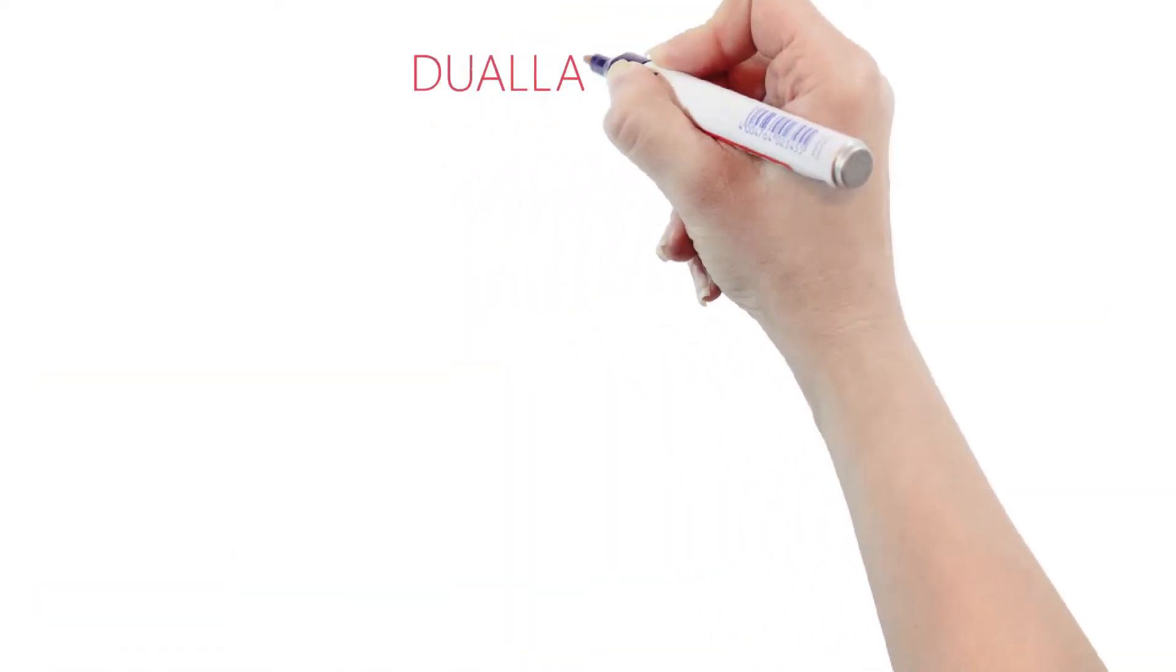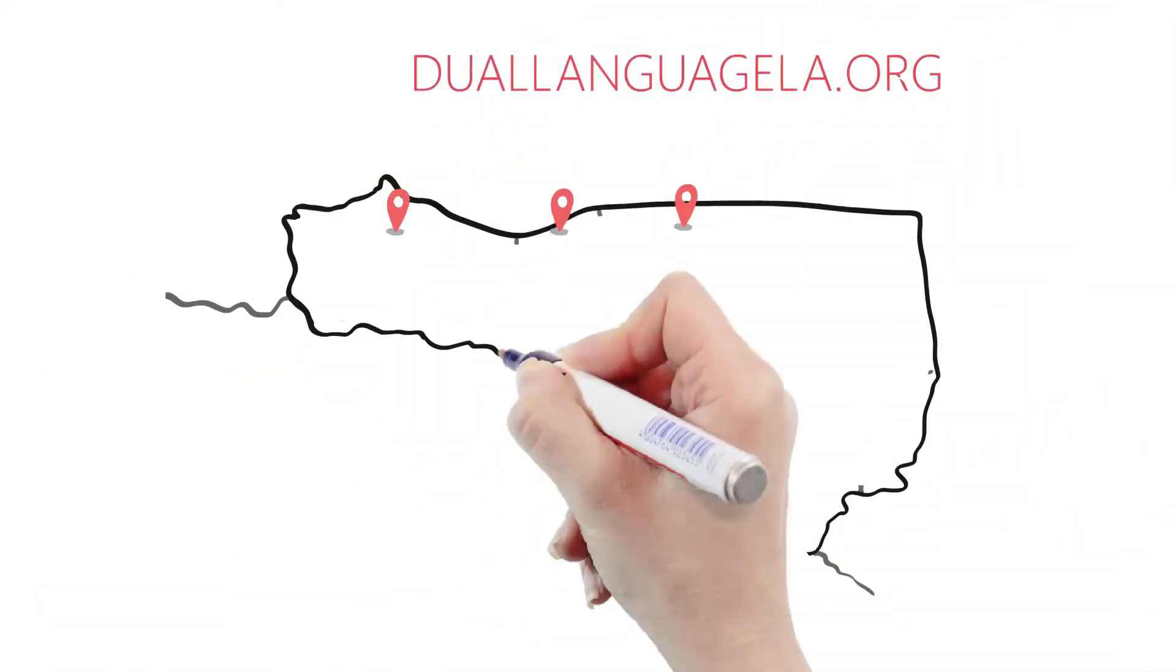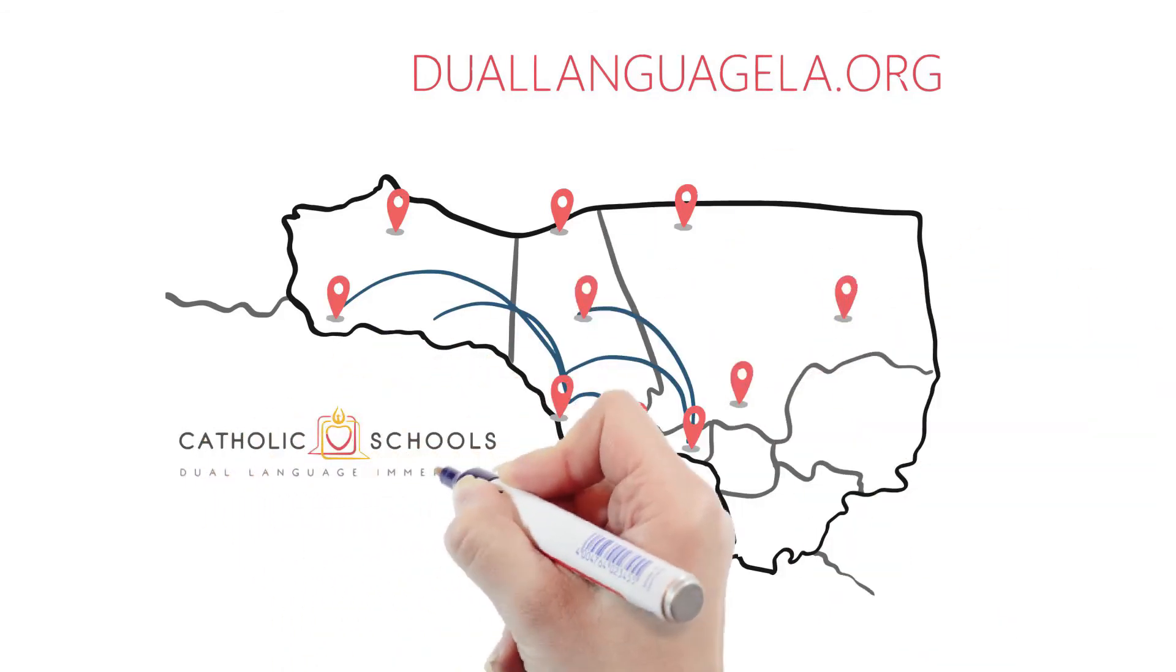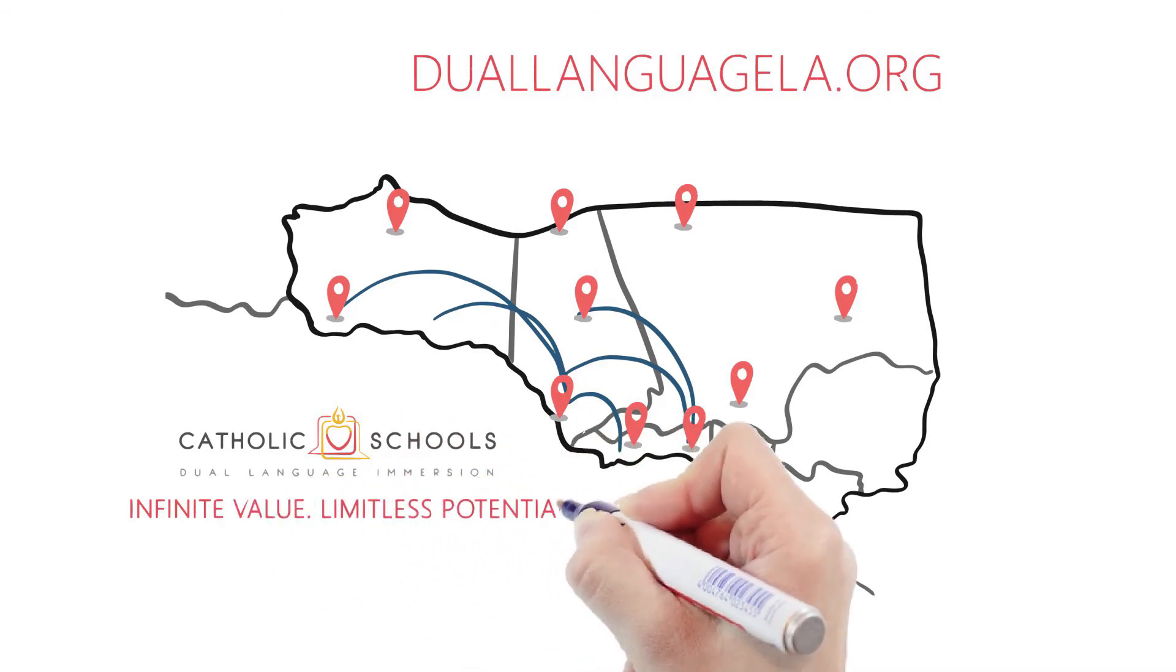To find a Dual Language Immersion school near you, visit us online at duallanguagela.org and subscribe to our updates as we open new Dual Language schools in Los Angeles, Ventura, and Santa Barbara counties.